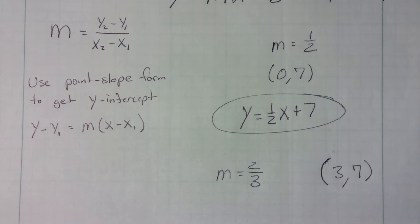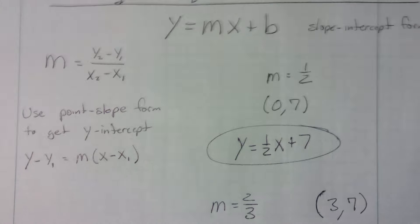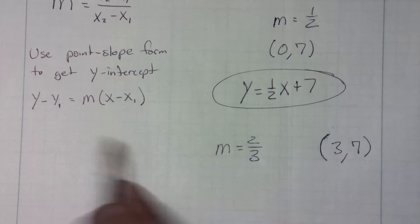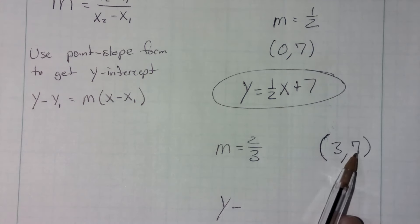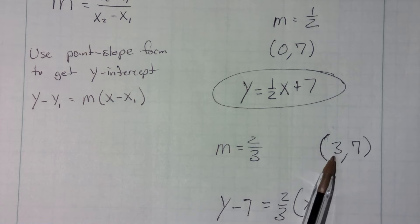So what you do is you're just going to write it in point-slope form first, and then convert it to the slope-intercept form. So let's do that. I would first go y minus my y value, which happens to be 7, equals my slope, which is two-thirds. Then I do parentheses, x minus my x value, which happens to be 3.